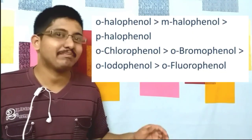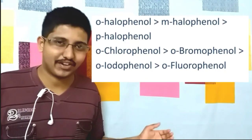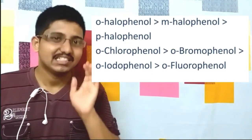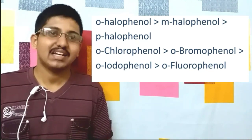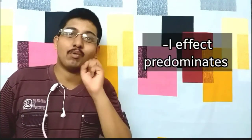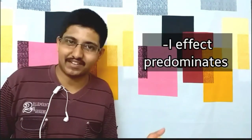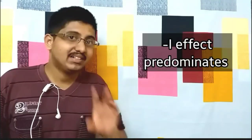When a halogen is attached to phenol, the order is: orthohalophenol > metahalophenol > parahalophenol. This is because the dominant effect here is the -I effect rather than +R effect. However, there is an exception: parafluorophenol is only as acidic as phenol, because the +R effect and -I effect balance each other.